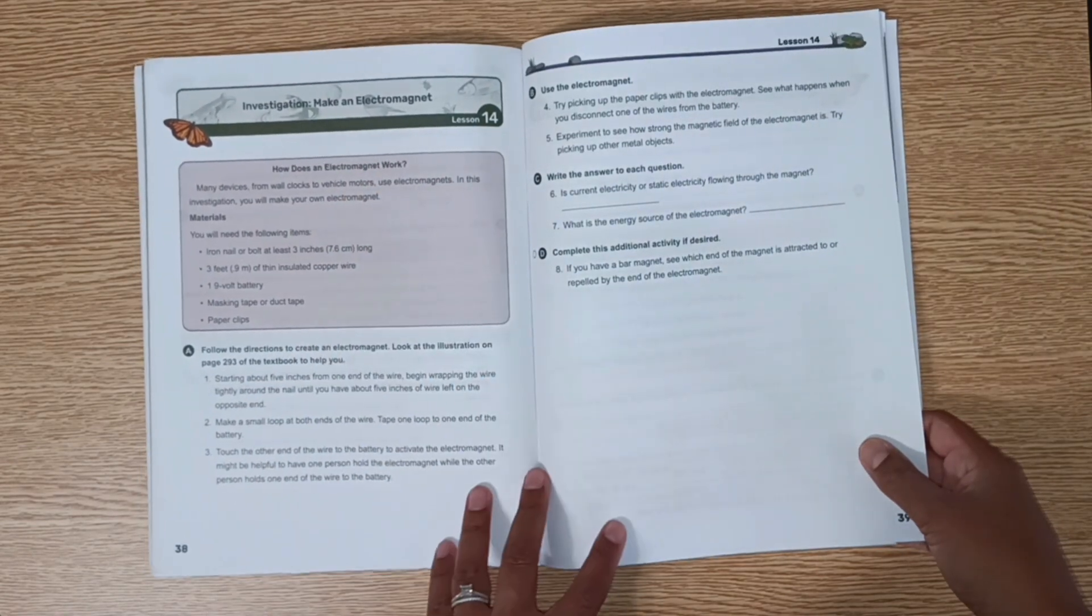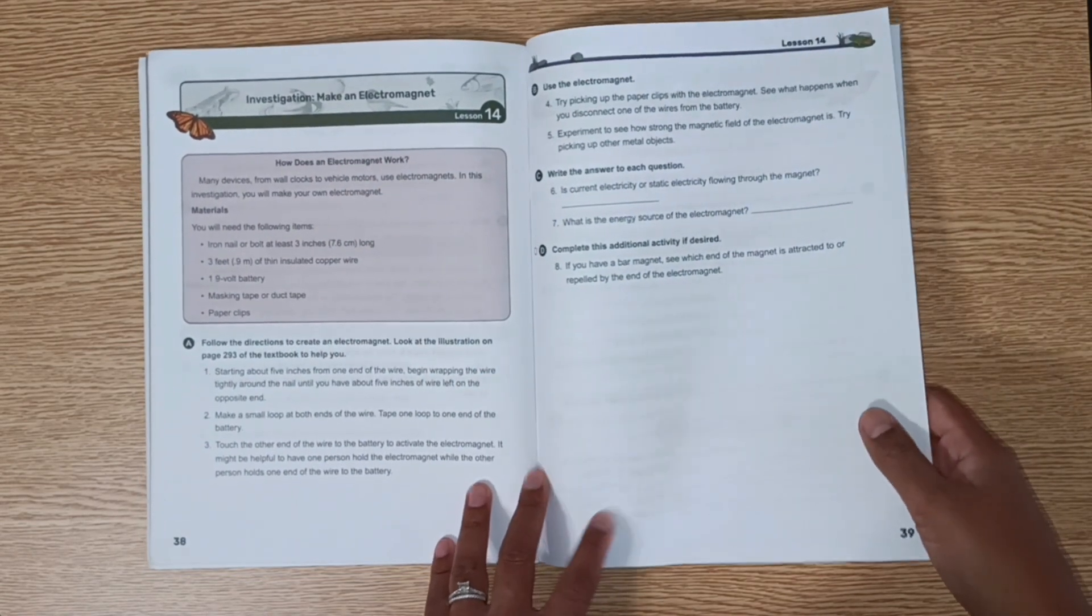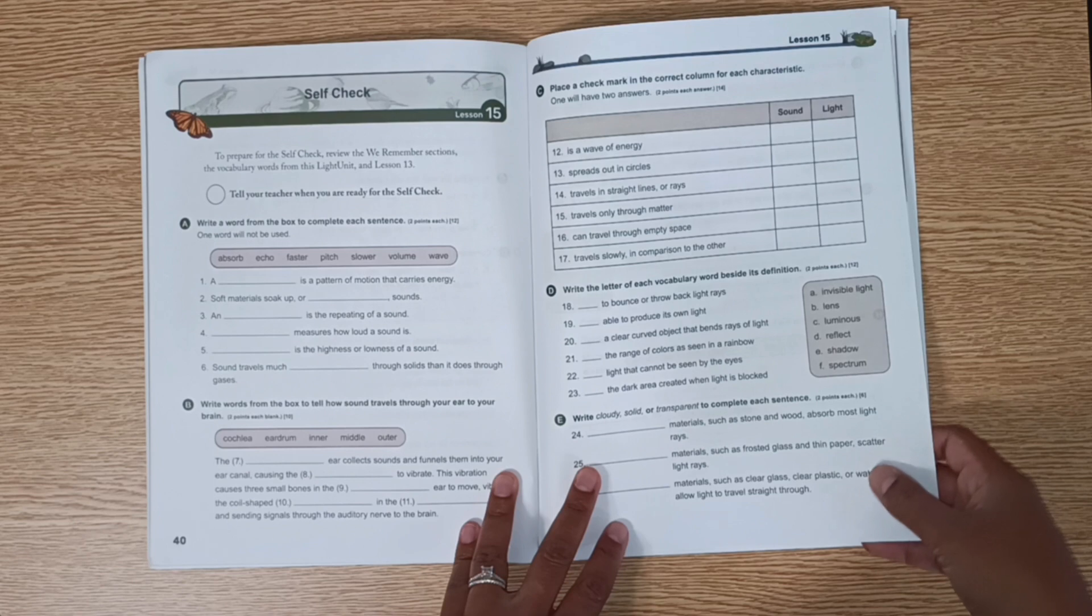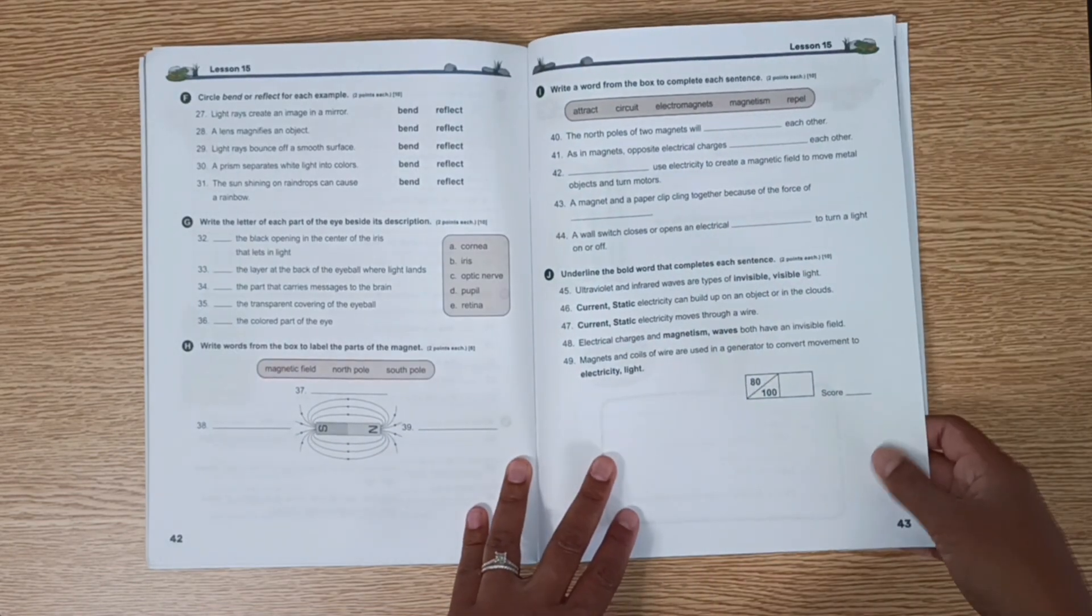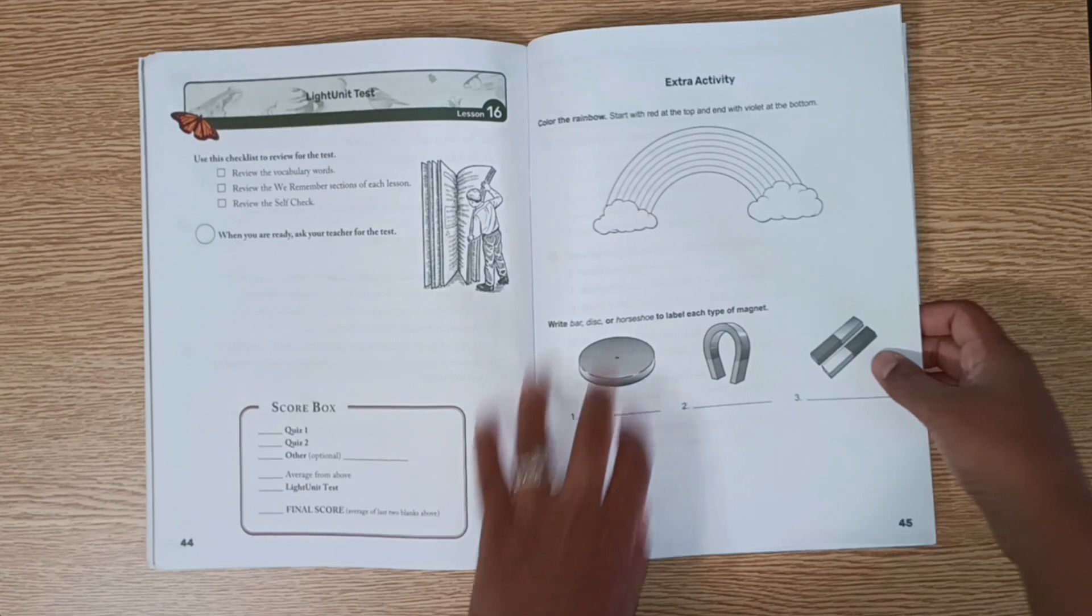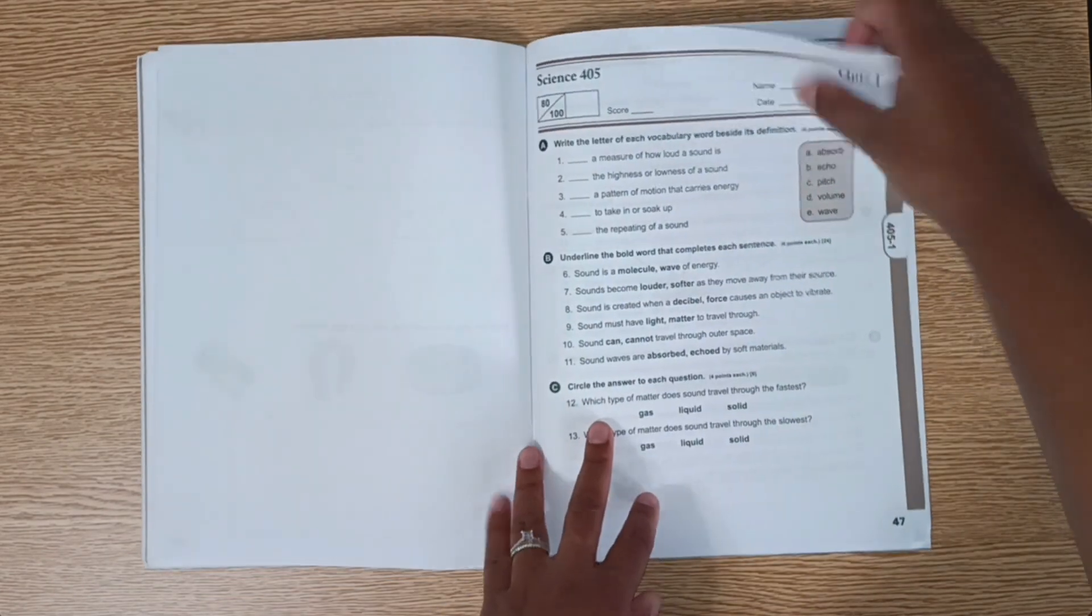Making an electromagnet. Self-check is before the test. There's another extra activity here. And then finally the two quizzes.